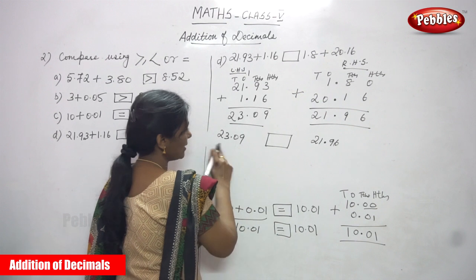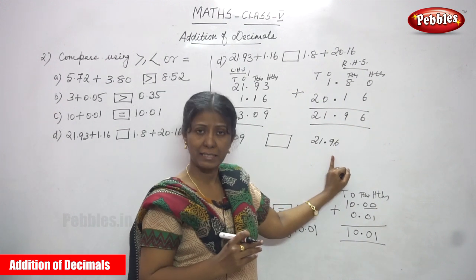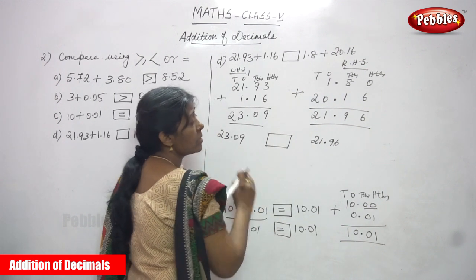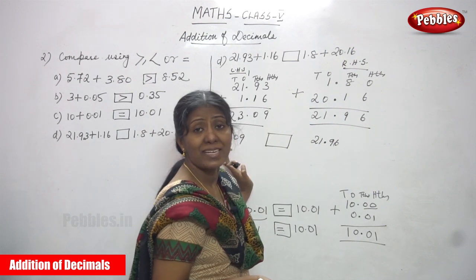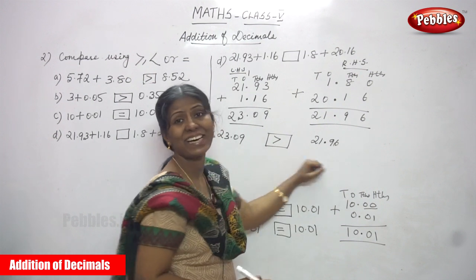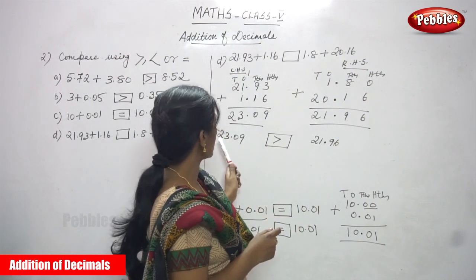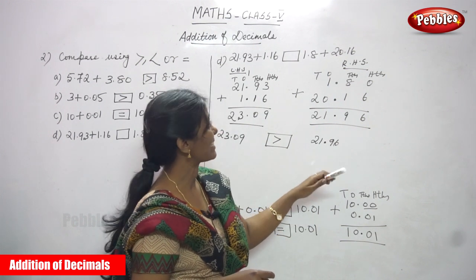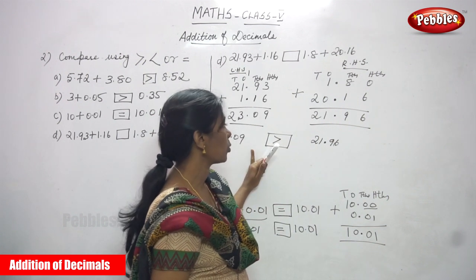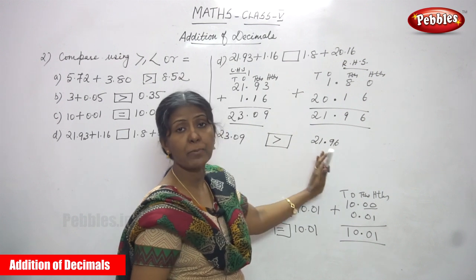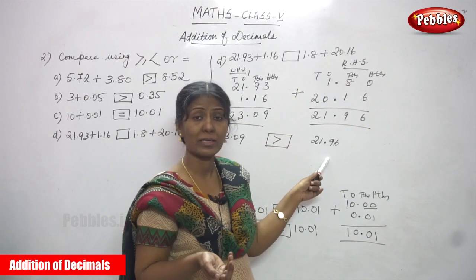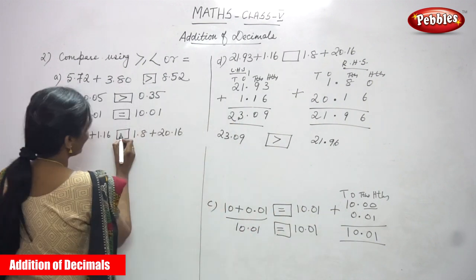RHS answer is 21.96. Compare: LHS is 23.09 and RHS is 21.96. They are not equal. 23.09 is greater than 21.96, so the left hand side is greater than the right hand side. Put a greater sign in the box. The answer is greater than — 23.09 is greater than 21.96.